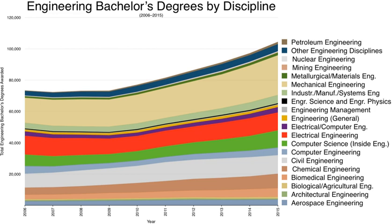Engineering education is the activity of teaching knowledge and principles to the professional practice of engineering. It includes an initial education — a bachelor's and/or master's degree — and any advanced education and specializations that follow.